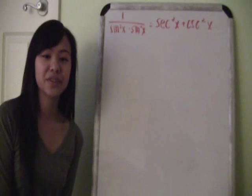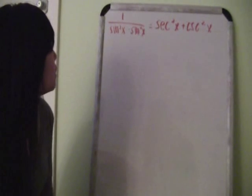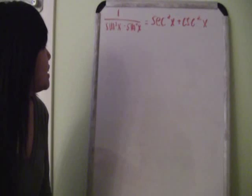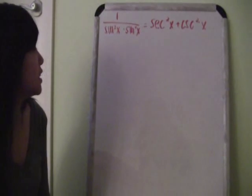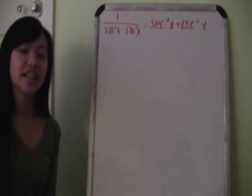Now we're going to try a more difficult problem. 1 over sine squared x minus sine to the fourth x equals secant squared x plus cosecant squared x. You can work on either side,